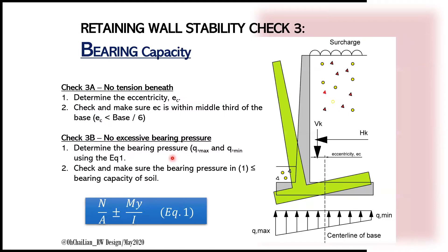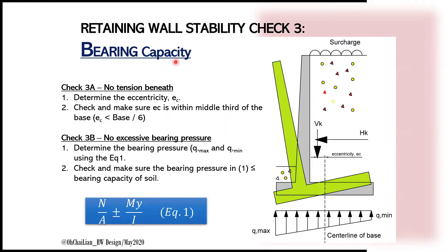Next, it is necessary to check for bearing capacity failure of the base. It is important to make sure there is no tension beneath or negative bearing pressure at the base. Tensile stress is not desirable because the tensile strength of the soil is very small. This can be ensured by keeping the eccentricity EC within the middle third of the base. Additionally, the bearing pressures Qmax and Qmin at the base shall be less than the bearing capacity of the soil, and this pressure can be determined using Equation 1.